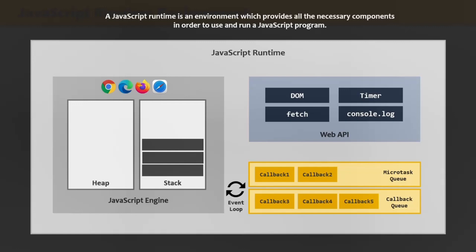A JavaScript runtime in the case of a browser consists of four main components which form a complete runtime environment: the JavaScript Engine, Web API, Callback Queue, Microtask Queue, and Event Loop. You can see them in this diagram. Let's talk about each of these components one by one.